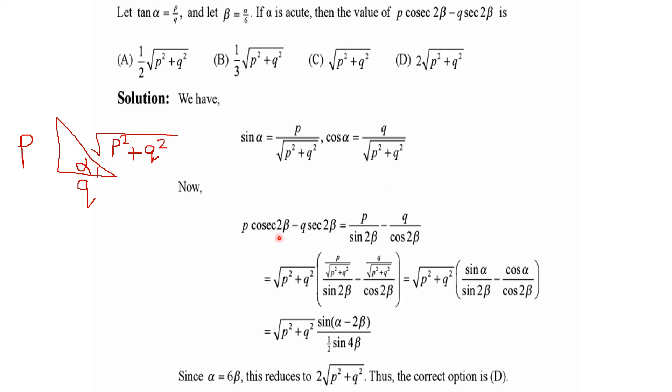Now, p·cosec(2β) - q·sec(2β) equals p·(1/sin 2β) - q·(1/cos 2β), which we can write as √(p² + q²) times certain expressions.